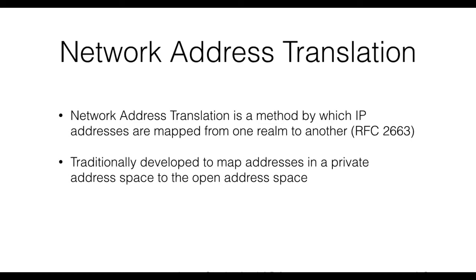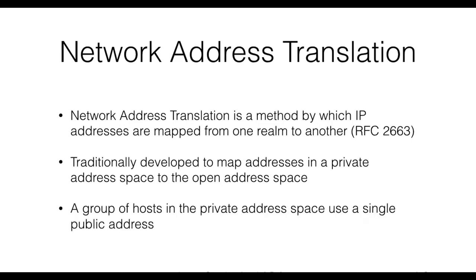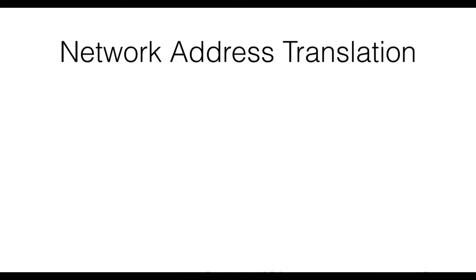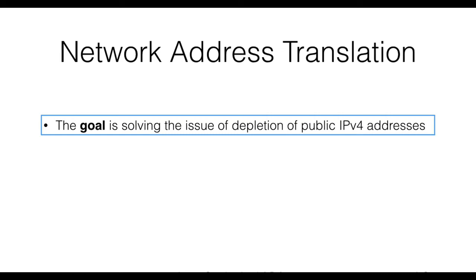For example, if your network is implementing NAT, all the hosts in your home network will be reachable from the open Internet using a single IP address, namely the one that your ISP has assigned to your router. The main goal of NAT nowadays is solving or at least slowing the depletion of the public IPv4 address space.